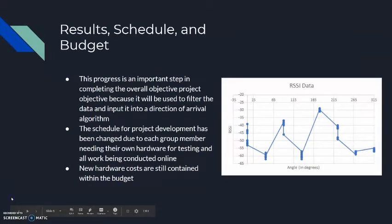This progress is important because the data will be filtered and then run through a direction finding algorithm. Furthermore, the project schedule has changed due to each member needing their own hardware and work being performed online. Finally, the cost of new hardware that has been ordered does not exceed the budget for the project, and this graph on this slide demonstrates some data that has been collected for a specific Wi-Fi network and the strength of the signal depending on the angle of the software-defined radio.